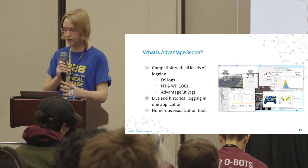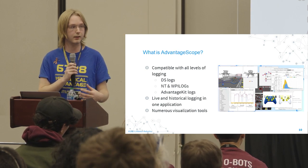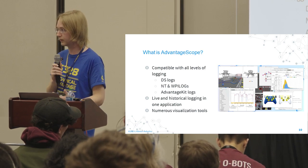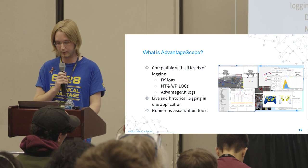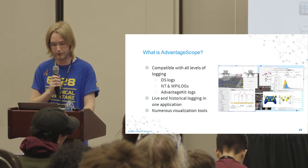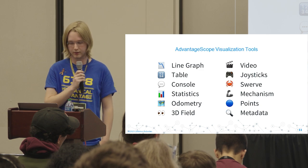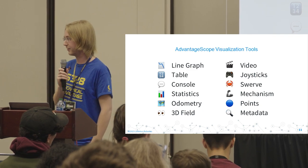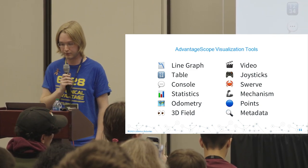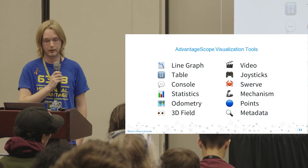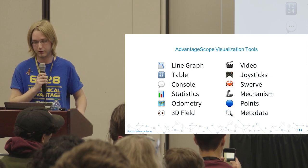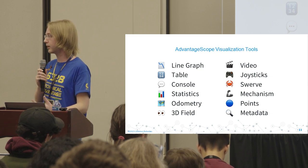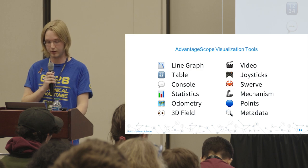AdvantageScope supports both historical and live logging in the same application, so you can seamlessly switch between them — it's the only tool that supports that out of the box. There are a whole bunch of visualization tools included: basic views like a line graph and table view, but also more complex options like a 3D field visualization, joystick view, swerve visualization, and many of these views can be combined for even deeper analysis.